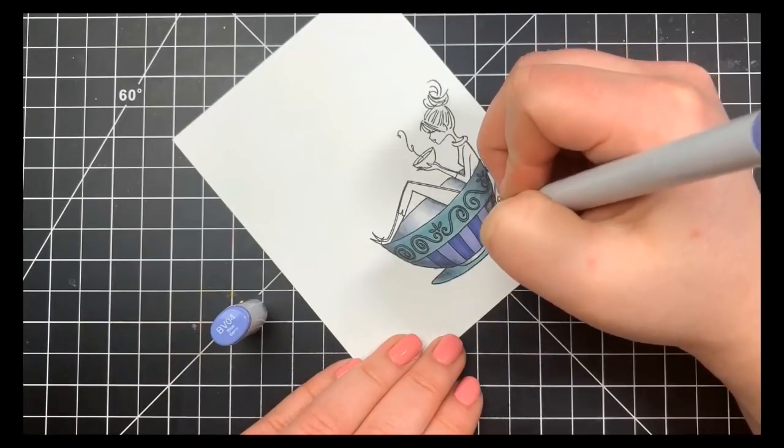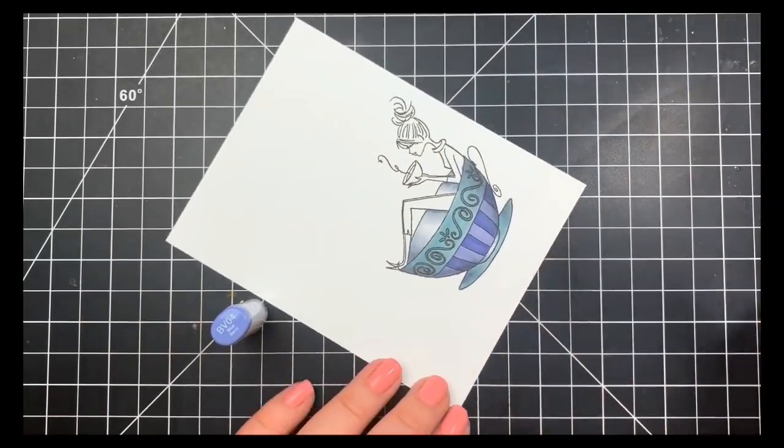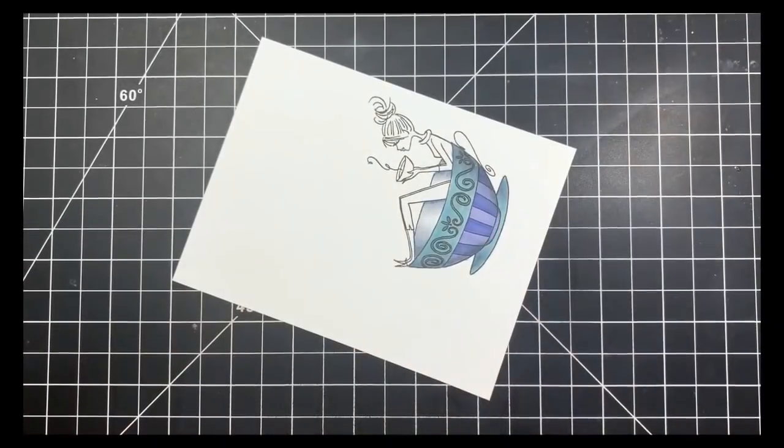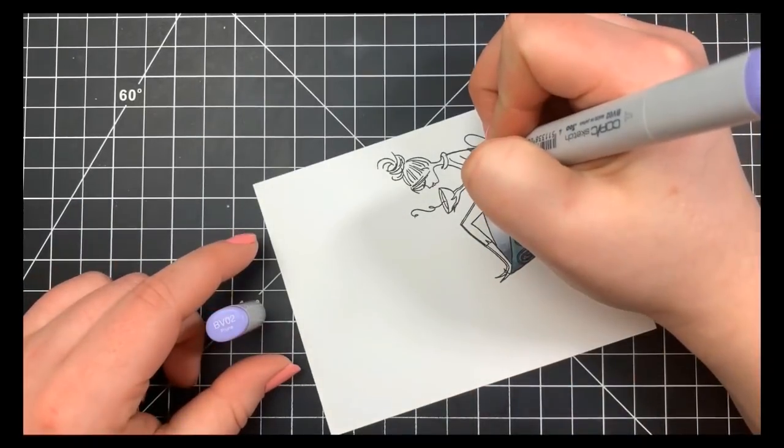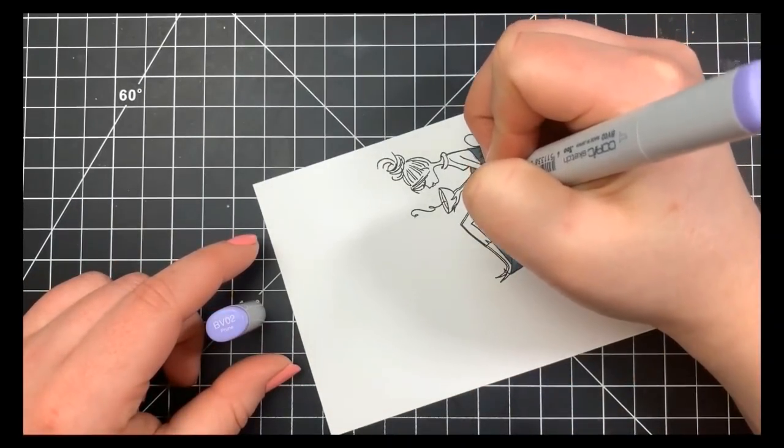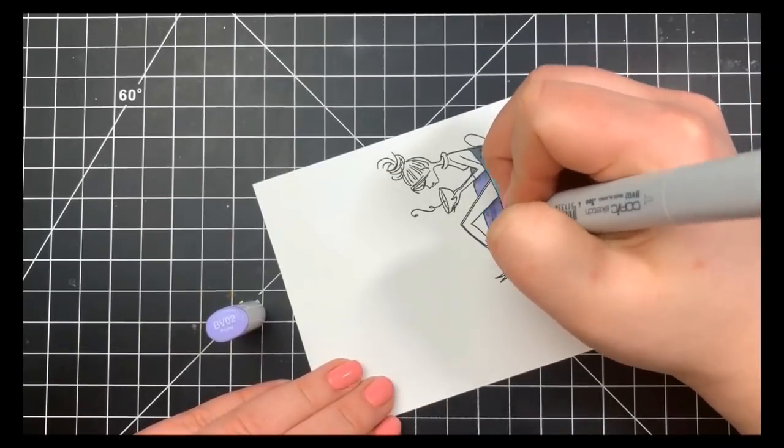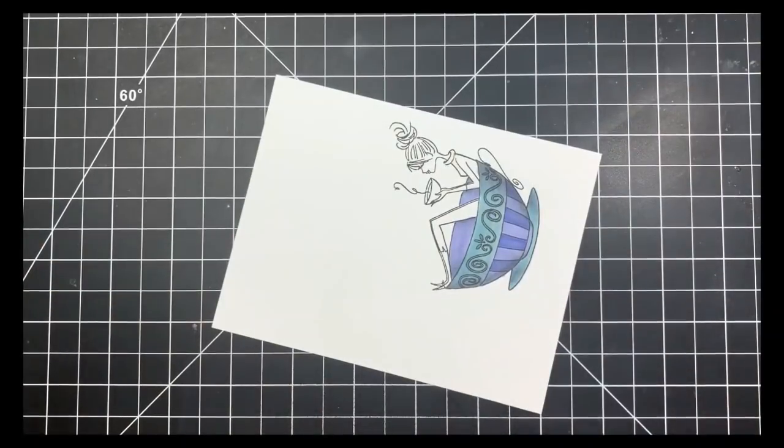Next we'll move on to this girl here sitting in this cup. I'm going to start off with her skin tones and I'm going to only be using three colors here for her skin and her hair just because these areas are pretty teeny tiny. Oh, I did color the inside of the cup too with that BV02.